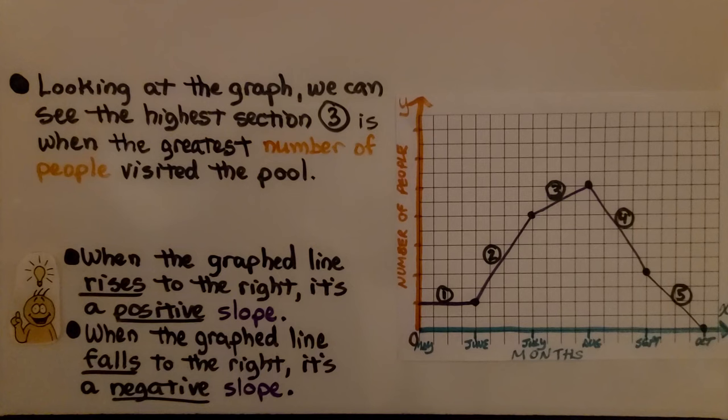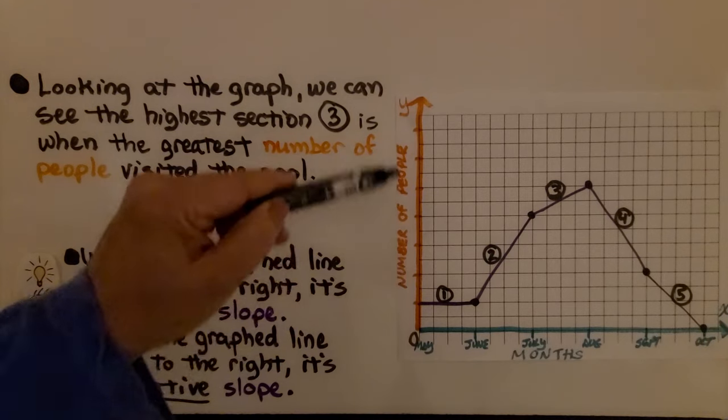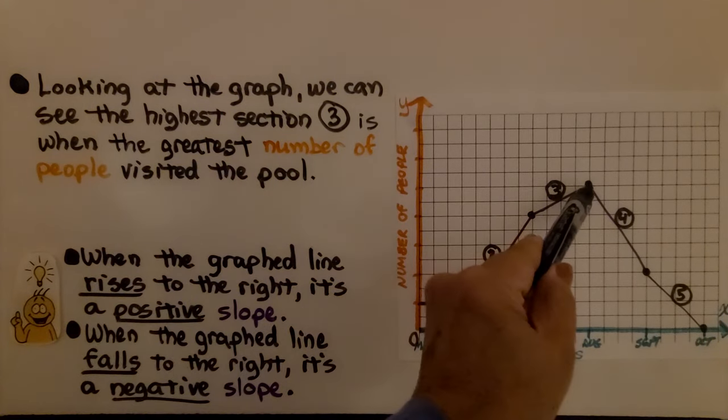Looking at the graph, we can see the highest section, Section 3, is when the greatest number of people visited the pool. Here's the number of people, and that's the highest point.